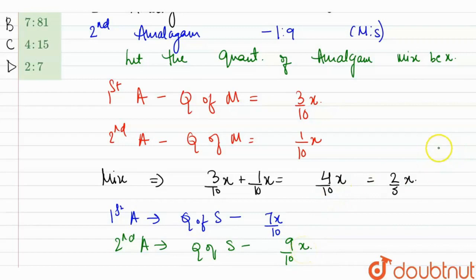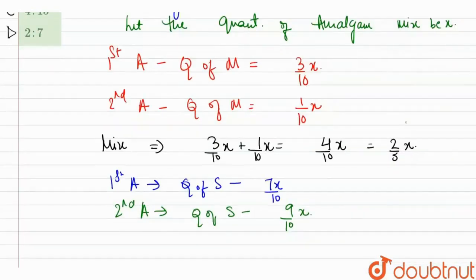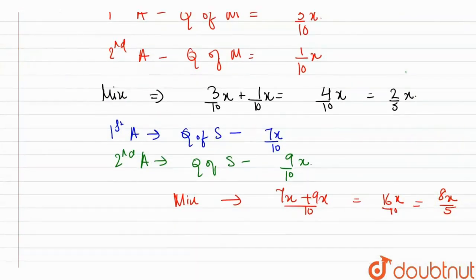So when we mix both amalgams, we'll add their quantities. So in the new mixture, we get 7x plus 9x upon 10, which will be 16x/10, which is 8x/5.